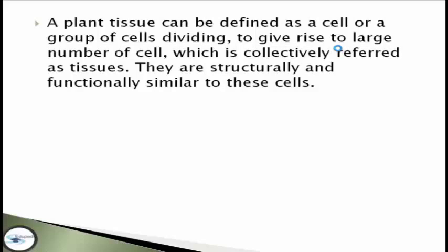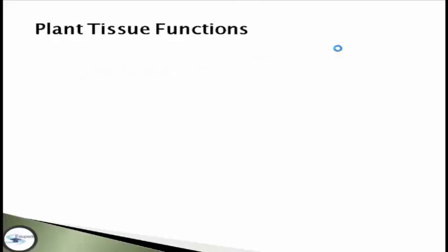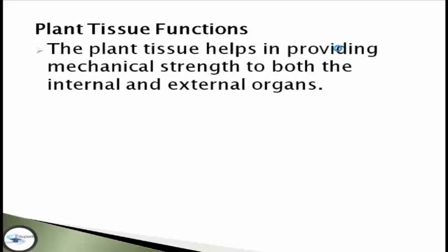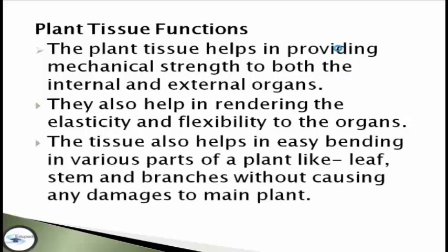They are structurally and functionally similar cells. Plant tissue helps in providing mechanical strength to both the internal and external organs. The second function, it also helps in rendering elasticity and flexibility to the organs. The next function, the tissue also helps in easy bending of various parts of a plant like leaf, stem, and branches without causing any damage to the main plant.